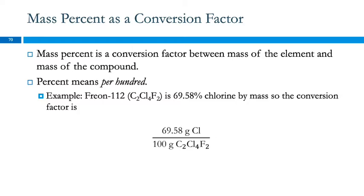So mass percent can be calculated from the molar mass. We can also use this mass percent as a conversion factor to convert between the mass of an element and the mass of the compound. So percent literally means per hundred. There's a hundred centimeters in a meter, there's a hundred years in a century. So cent refers to a hundred. So this is per hundred. If we see the statement like this, Freon-112 is 69.58% chlorine by mass, we can use this and turn it into a conversion factor, because this is saying there are 69.58 grams of chlorine per hundred grams of the compound.